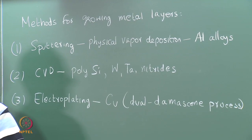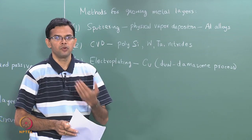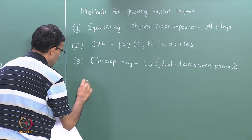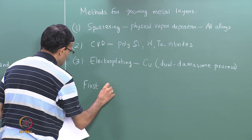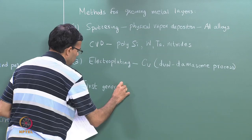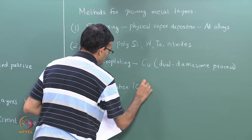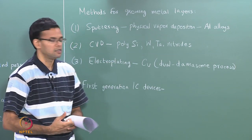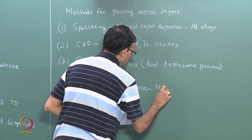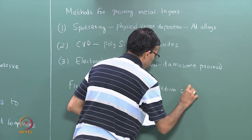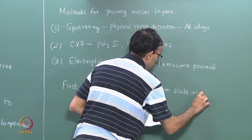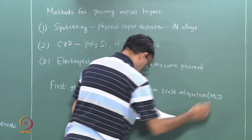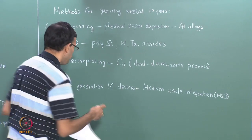If you look at the first generation of IC circuits, usually there was one layer of metallization carried out. The first generation devices had usually a few hundred components per device — an example of medium scale integration, or MSI. So essentially there was a single layer of metallization.